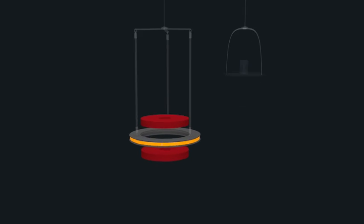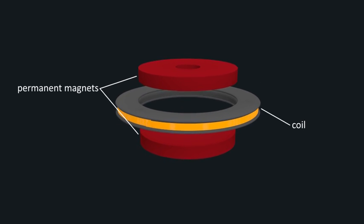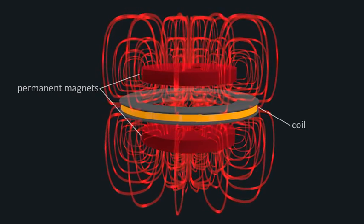This force is produced by a coil of wire that is suspended in a strong magnetic field created by stationary permanent magnets.